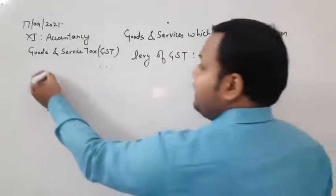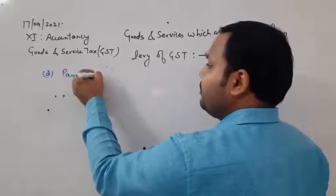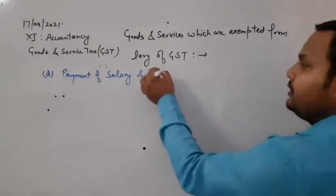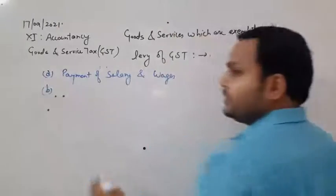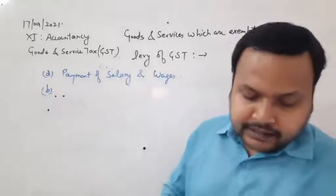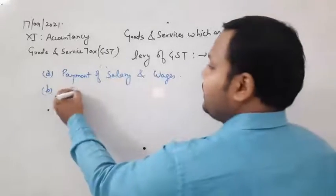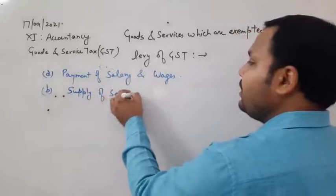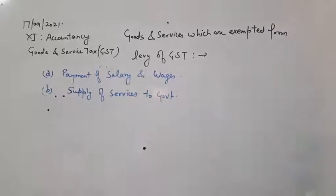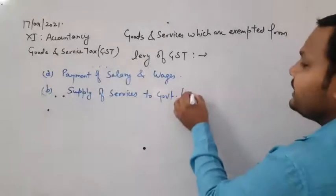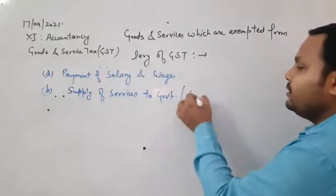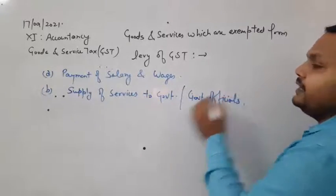Here is an important list of goods and services exempted from GST. First: payment of salary and wages. If you pay salary and wages to employees, in this situation you do not have to pay GST. Second: supply of services to the government or for other countries — if you pay salary or provide such services, then you do not have to pay GST.